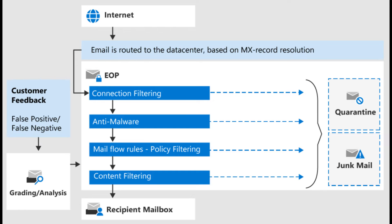There is also content filtering and mail flow rules, which we already discussed in the last video. Those rules also apply in Exchange Online Protection, and based on all these policies, emails go to quarantine, junk email, or if Exchange Online Protection finds no problem, the mail is received by the recipient.